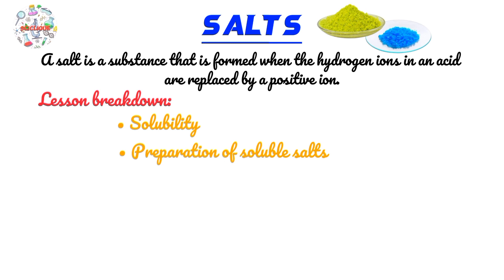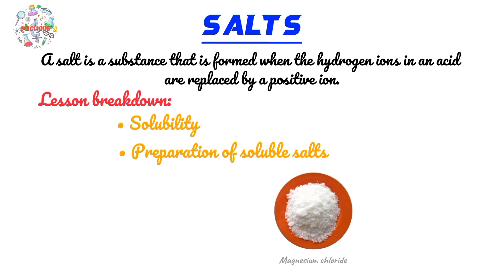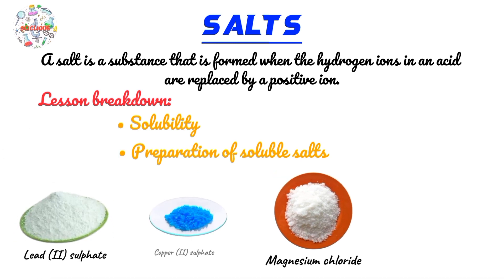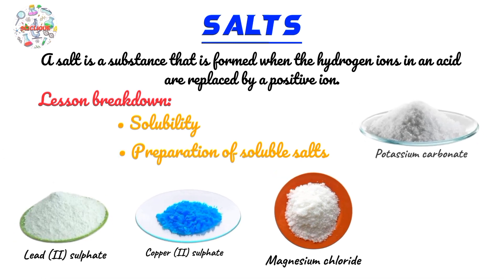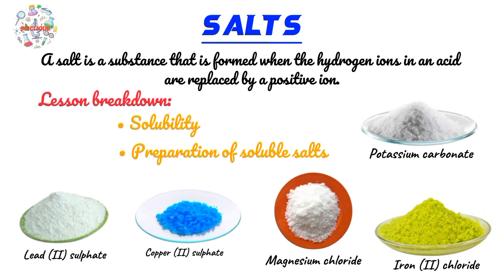What is a salt? In chemistry, a salt refers to a wide range of ionic compounds, such as magnesium chloride, lead sulfate, potassium carbonate, and so on.